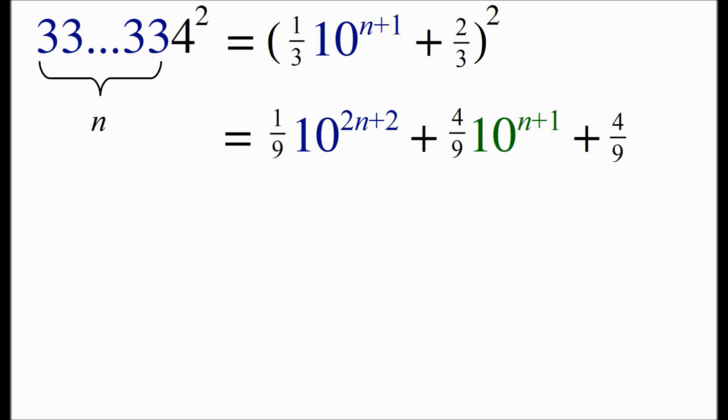We're going to write these out in decimal form. So for the number that's blue, if we take 1 ninth of a power of 10, we're going to get a string of 1s. In fact, we're going to get 2n plus 2 ones. And we're going to get 1 ninth extra. So for example, if you have 100 times 1 ninth, that will be 11.11111, which is plus 1 ninth.